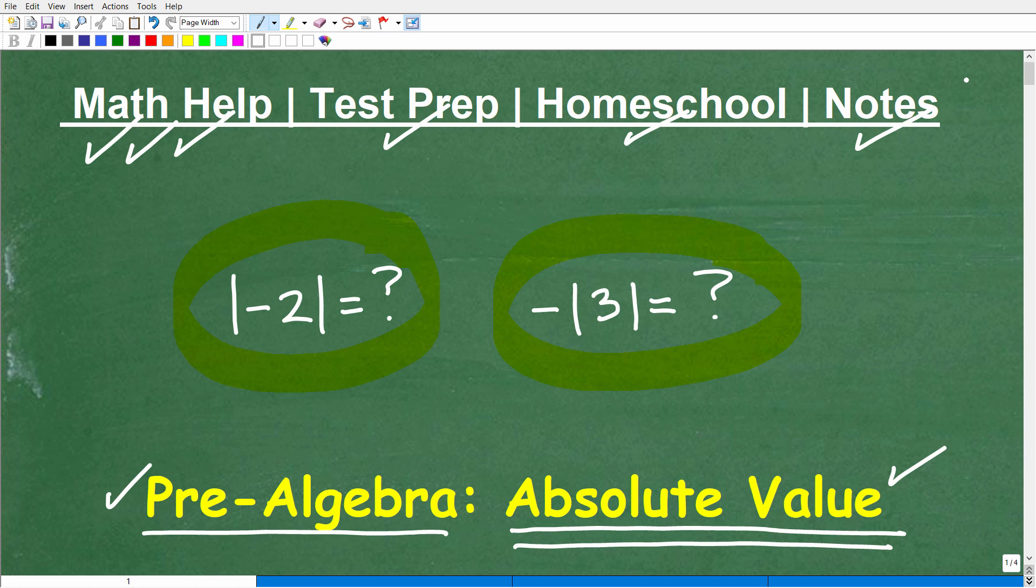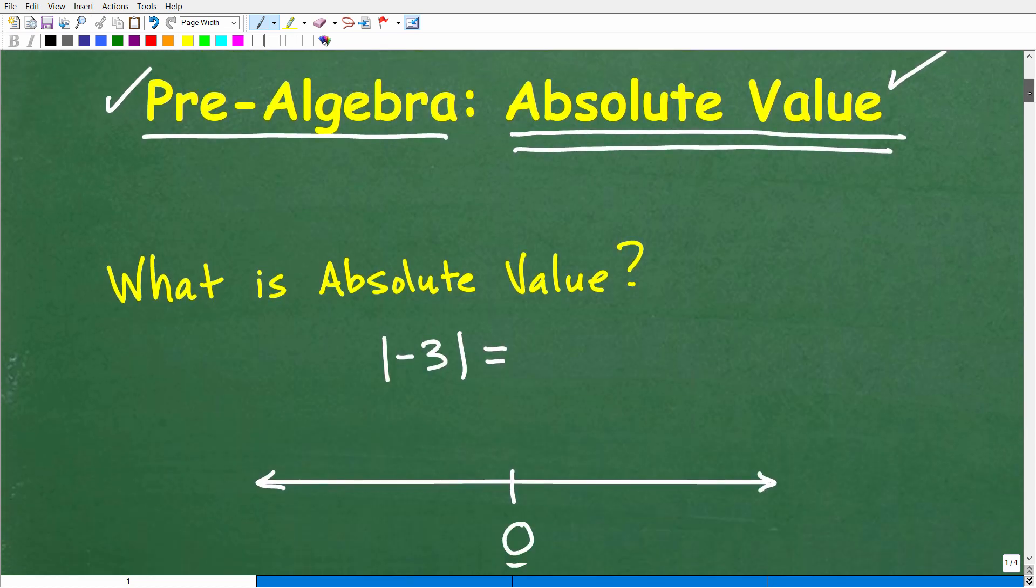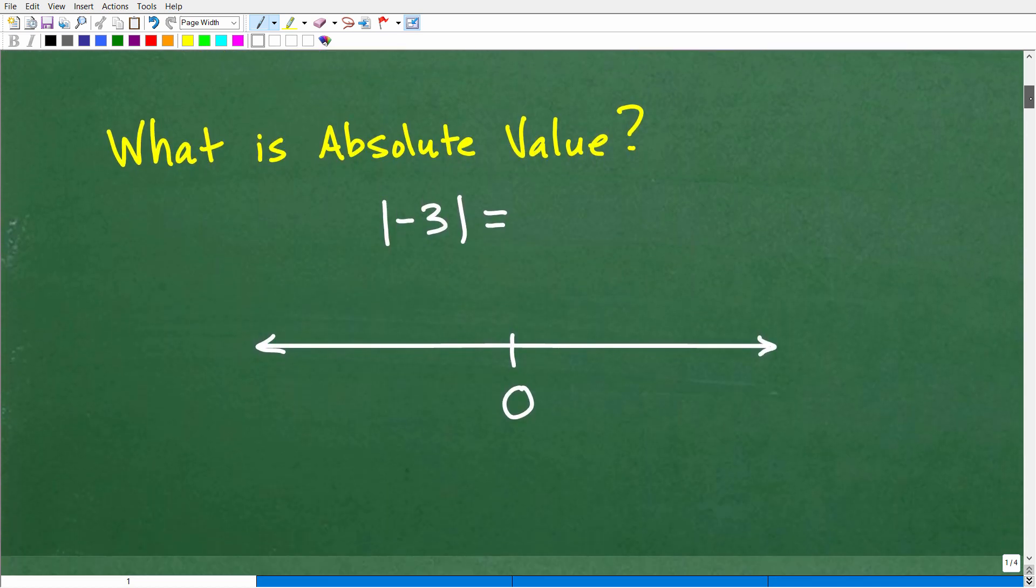Okay, so let's get into absolute value, and let's first answer the question, what is absolute value? All right, so here is a problem. This is the absolute value of negative three. Now, first of all, absolute value is what we call a function in mathematics. It's an absolute value function, but most people know it with these little bars. Okay, they're like straight little bars like this, and they're straight.